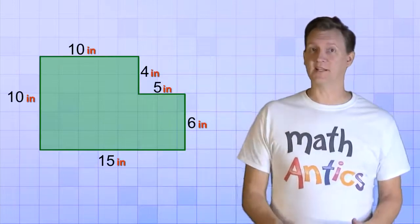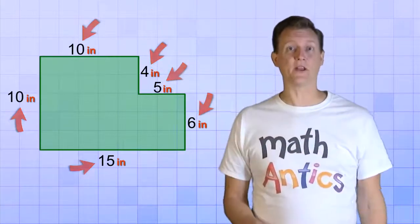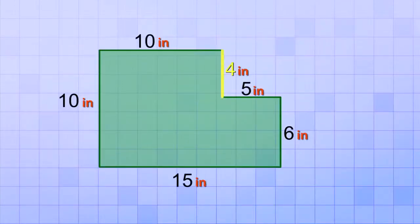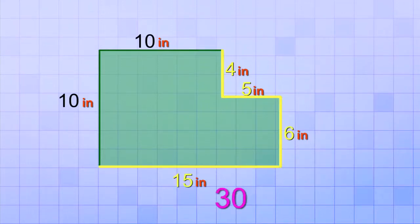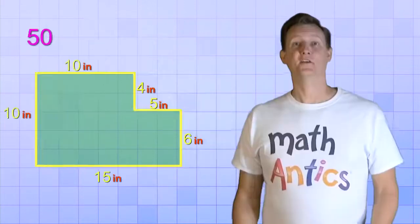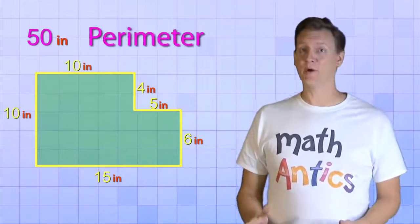There! We've used the lengths that we did know to figure out the lengths that we didn't know. And now that we know the lengths of all the sides, we can just add them all up to get the perimeter. 4 plus 5 plus 6 equals 15. And then 15 plus 15 equals 30. 30 plus 10 equals 40. And last of all, 40 plus 10 equals 50. So, the sum of all the sides is 50 inches. And that's the perimeter of this shape.